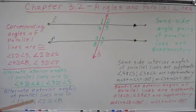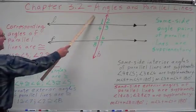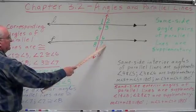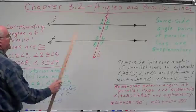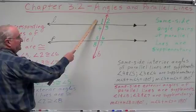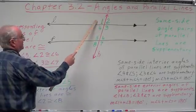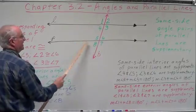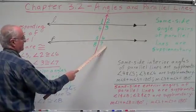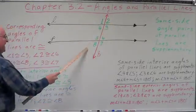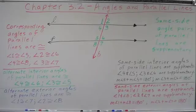The alternate exterior angles of parallel lines are also congruent. Exterior, opposite sides — angles one and seven are congruent. Alternate means not adjacent, so it can't be angle two. Alternate means opposite sides, so it can't be one and eight — so it's one and seven. And angles two and eight are congruent. This also means their measures are equal.